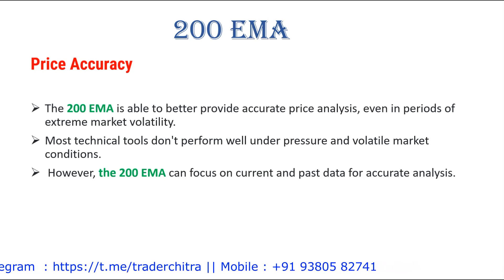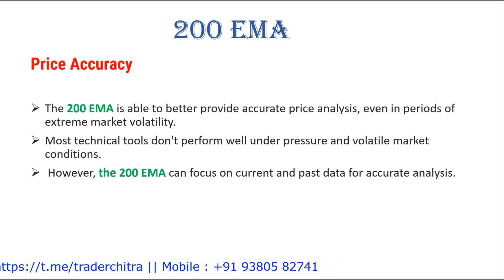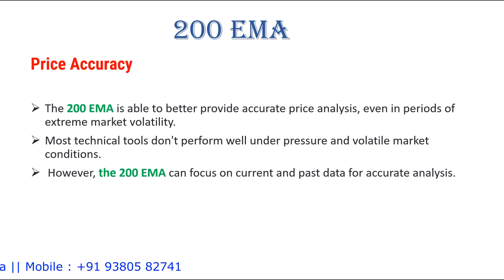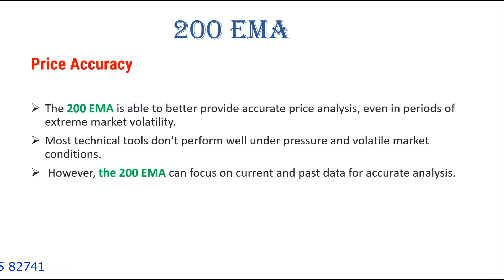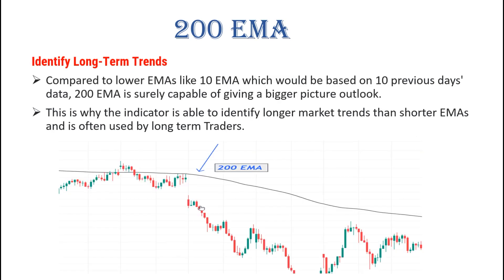We need to understand why we use the 200 EMA and what accuracy it provides. When we use the 200 EMA in our trading, it gives double confirmation or strong confirmation to enter into a long or short trade. It is able to provide better accurate price analysis even in periods of extreme volatile markets. In sideways or consolidation phases, we can understand where to enter long or short. Most technical tools don't perform well under pressure and volatile conditions, but the 200 EMA can focus on current and past data for accurate analysis.